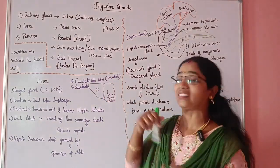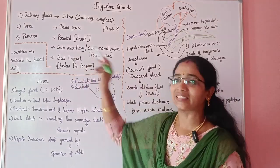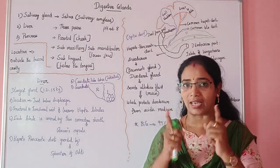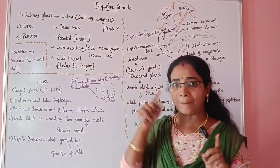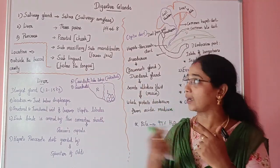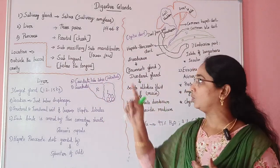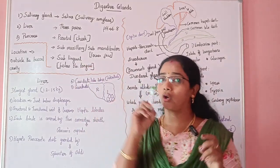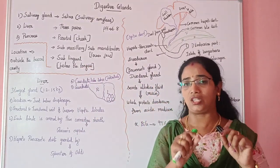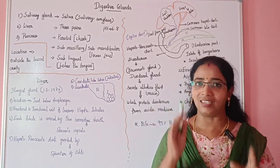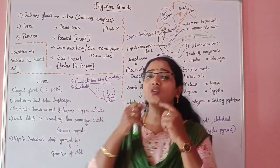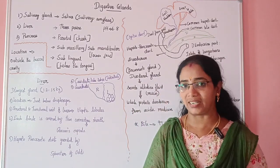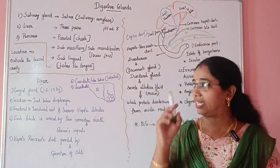The sublingual gland secretes saliva. In total, the salivary gland has three parts: parotid, submaxillary or submandibular, and sublingual — below the tongue. The salivary gland is located outside the buccal cavity, but its secretion is introduced inside the buccal cavity.